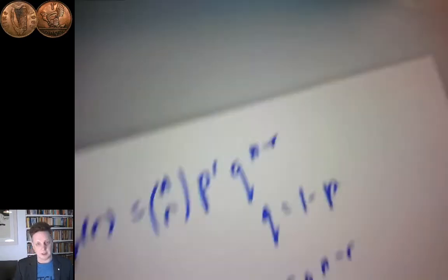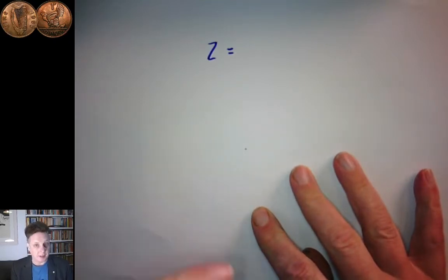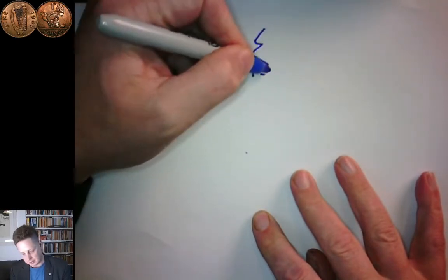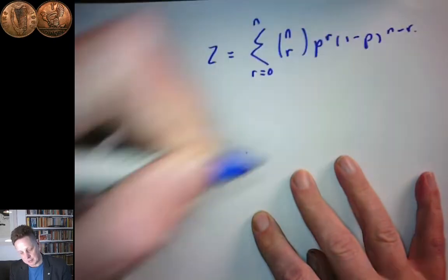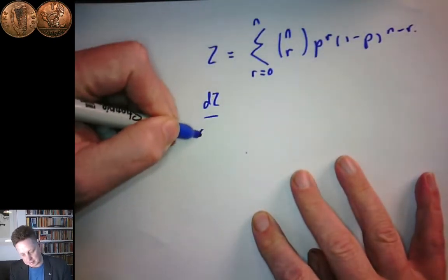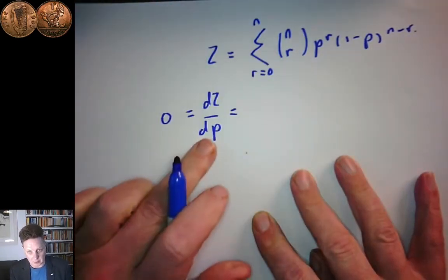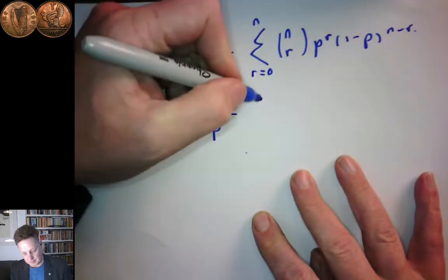This also points to an interesting trick. It's a much more general phenomenon, applicable in lots of examples where we're interested in the properties of a distribution. We write Z — the formula for Z — as the sum from r equals 0 to n of n choose r, p to the r, (1 minus p) to the n minus r. And then we're going to differentiate Z with respect to p. We know that must be 0, because Z is a constant — Z is just 1, it doesn't depend on p. This sum is finite, so there's no problem with taking the derivative.